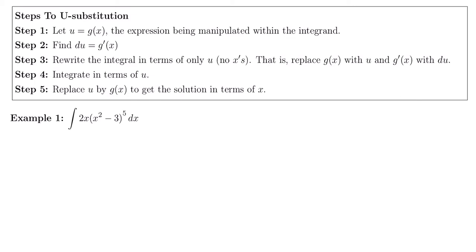We are going to use u-sub on this first example because we have 2x times x squared minus 3 to the fifth. That would be a very complicated derivative because we would have not only a product rule because we have x's times x's, but it would be a chain rule because we have more than x raised to the power of 5.